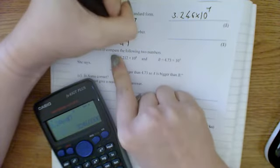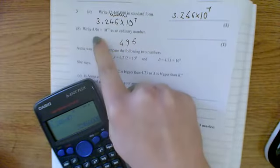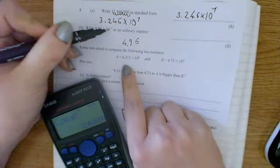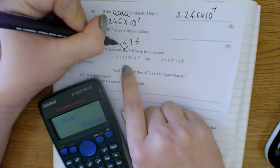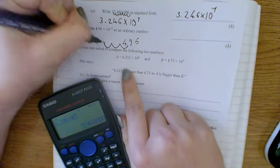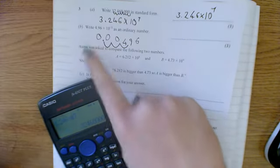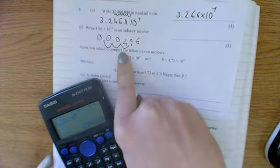So I would first of all write out the 4.96. Now the decimal point was originally here, and you can think of that as moving three spaces. 1, 2, 3. So we get this, 0.00496.